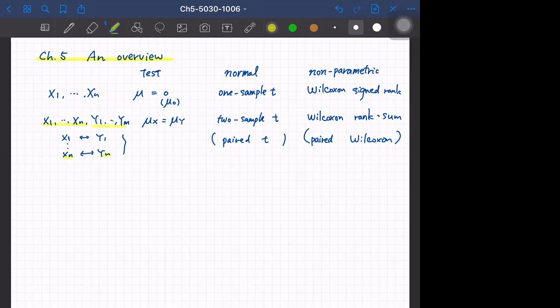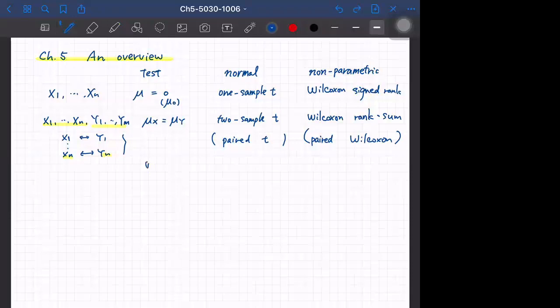We also discuss when we have two samples whether sigma x is equal to sigma y. This is the test for variance and we discuss F-test. The nonparametric version we don't really discuss in this chapter. So this is an overview of chapter 5.